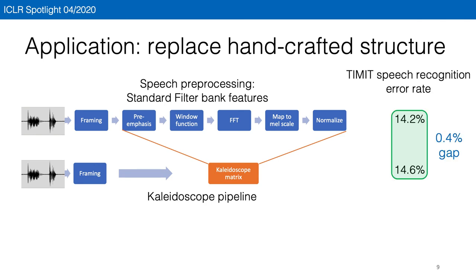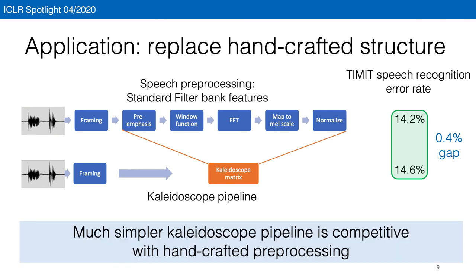On the TIMIT speech recognition dataset, this pipeline learned from scratch is within 0.4% of the hand-tuned pipeline that has been standard for more than a decade. So this much simpler kaleidoscope pipeline is competitive with hand-engineered preprocessing.